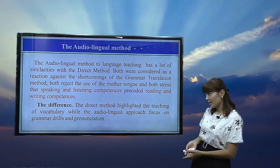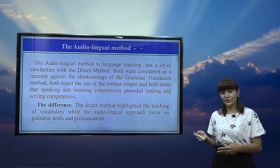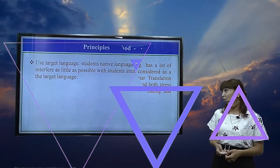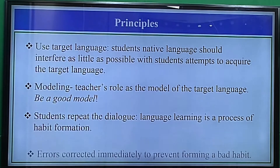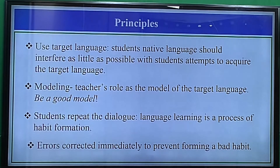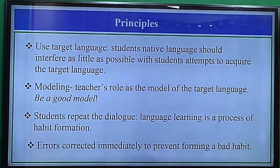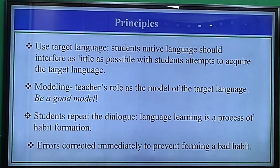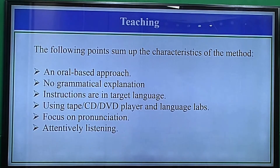The difference between the two is that the direct method highlighted the teaching of vocabulary, while the audio-lingual approach focused on grammar drills and pronunciation. The principles of the audio-lingual method include: use the target language — the native language should interfere as little as possible; modeling — the teacher serves as the model of the target language; students repeat dialogues; language learning is a process of habit formation; and errors are corrected immediately to prevent forming bad habits.